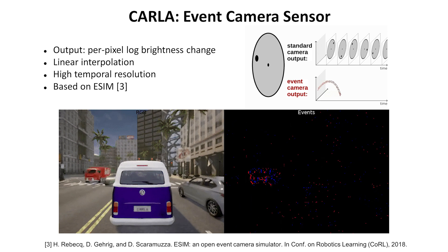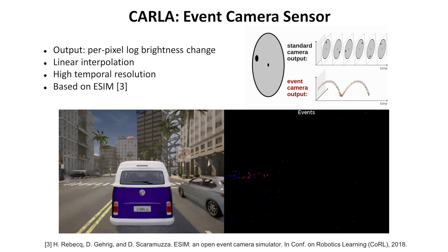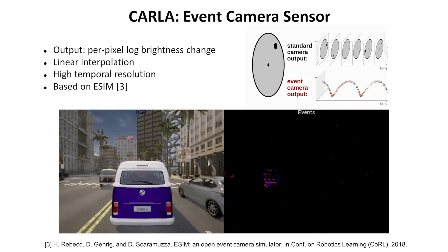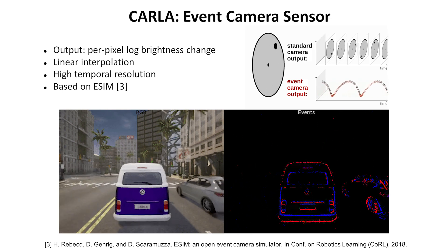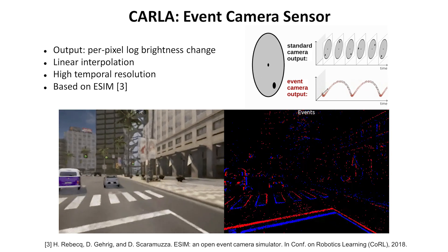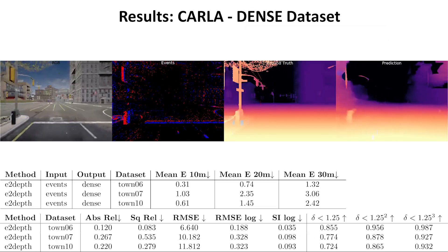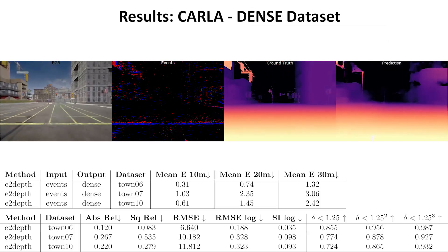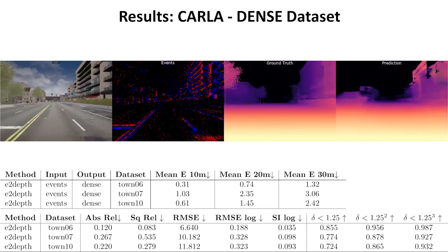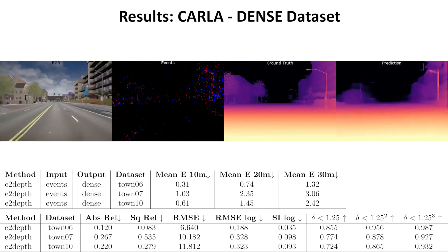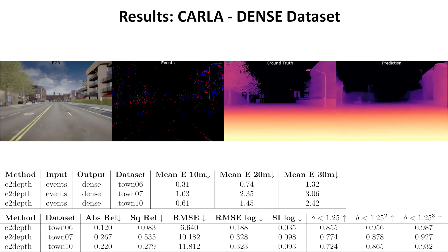We first train in simulation. Therefore, we implemented an event camera sensor in CARLA. The event camera takes three-dimensional scenes from Unreal Engine and directly produces per-pixel brightness changes in the form of events. We also provide a depth estimation synthetic events dataset, or DENS for short. DENS is split into five sequences for training, two sequences for validation, and one sequence for testing.